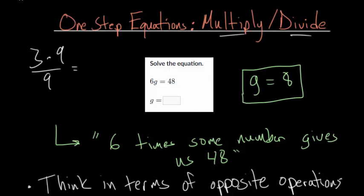So for this particular problem, let me rewrite it. We have 6 times g equals 48. And we know the goal for all of these problems is to get our variable isolated on one side equal to some number. So in this case, we want g equals something.